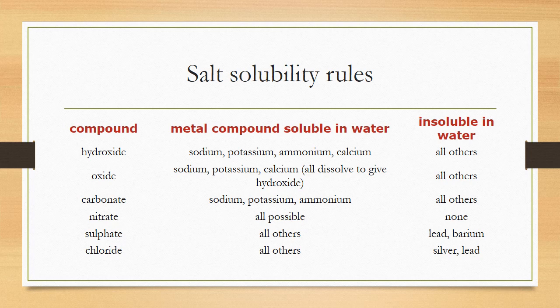Salt solubility rules are important to learn. All hydroxides are soluble if they are sodium, potassium, ammonium, or calcium — the rest are insoluble. All nitrates are soluble. Sodium, potassium, and ammonium carbonates are soluble; the rest are not. For sulfates, lead and barium are insoluble; all others are soluble. For chlorides, silver and lead chlorides are insoluble; all others are soluble.